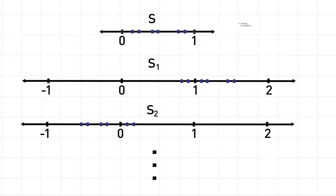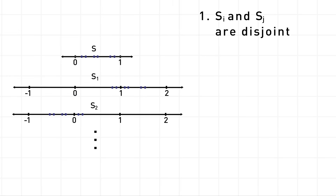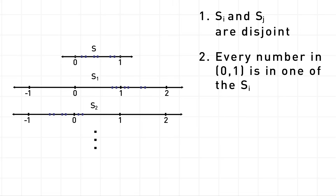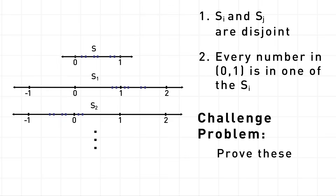Let's make two crucial observations about these copies of S. First observation: they're disjoint. That means that there is no point which is in both Si and Sj for any two different numbers i and j. Second observation: every number between 0 and 1 is in one of the copies of S — in either S1 or S2 or S3, and so on. Your challenge problem for the week is to prove these two observations.